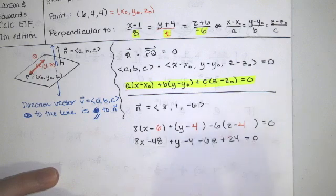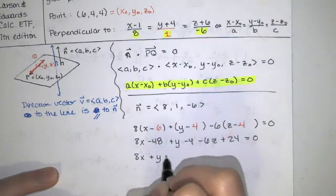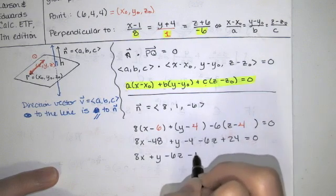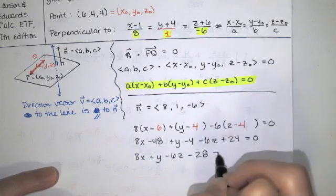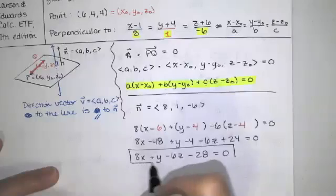Positive 20 minus 48 is going to give me negative 28. So we have 8x plus y minus 6z minus 28 is equal to 0. That's one way that you can write the equation of this plane.